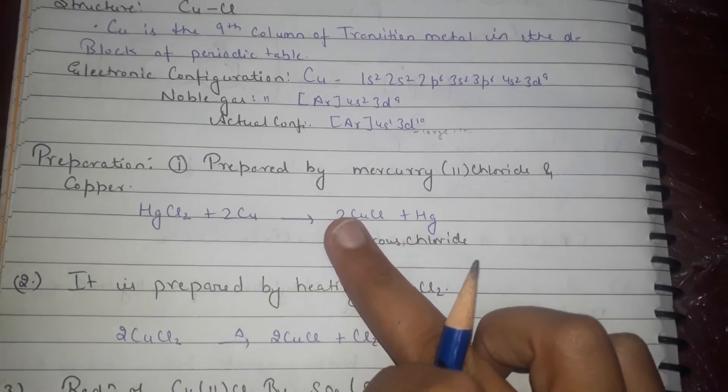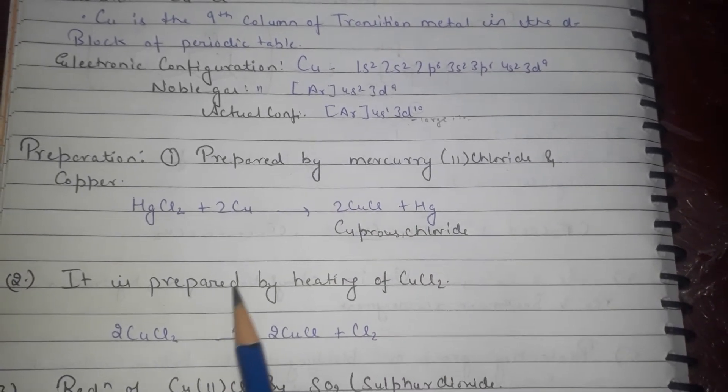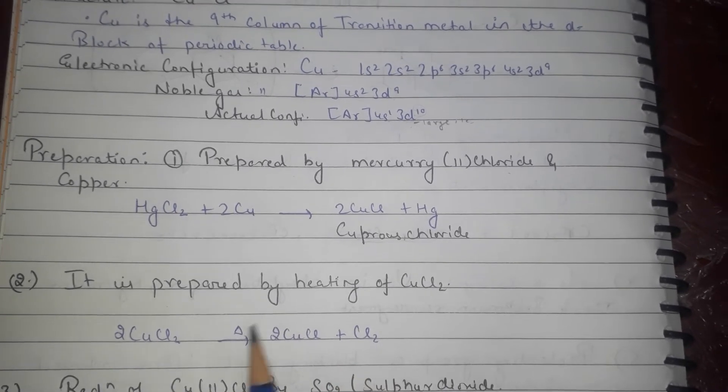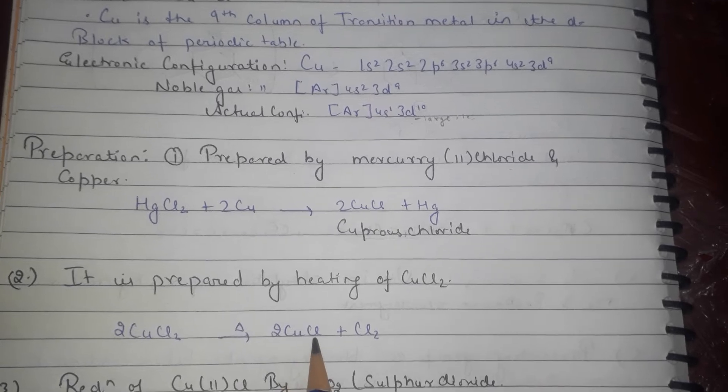Now coming to second preparation of cuprous chloride: direct heating of 2Cu plus Cl2 will give 2CuCl. This is cuprous chloride, plus Cl2 will be the side product.